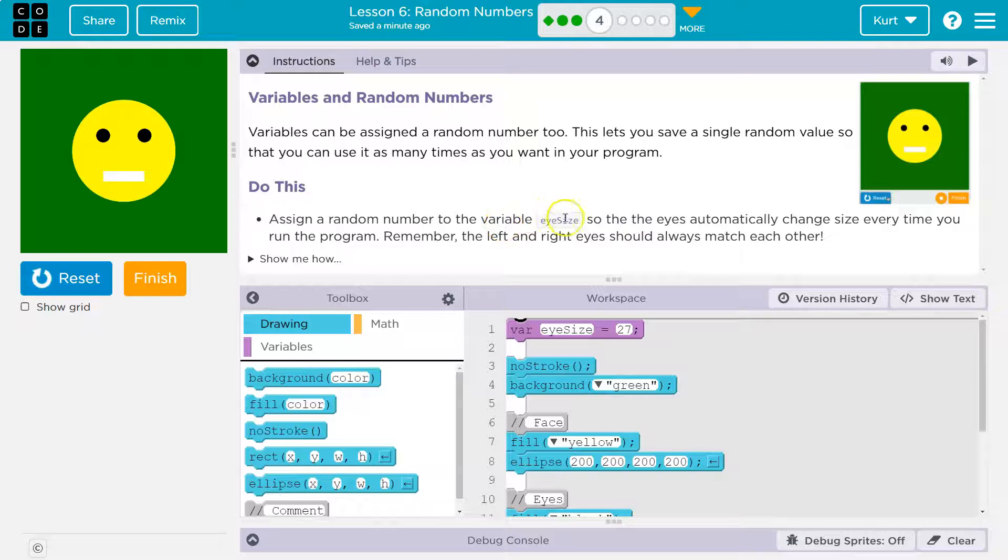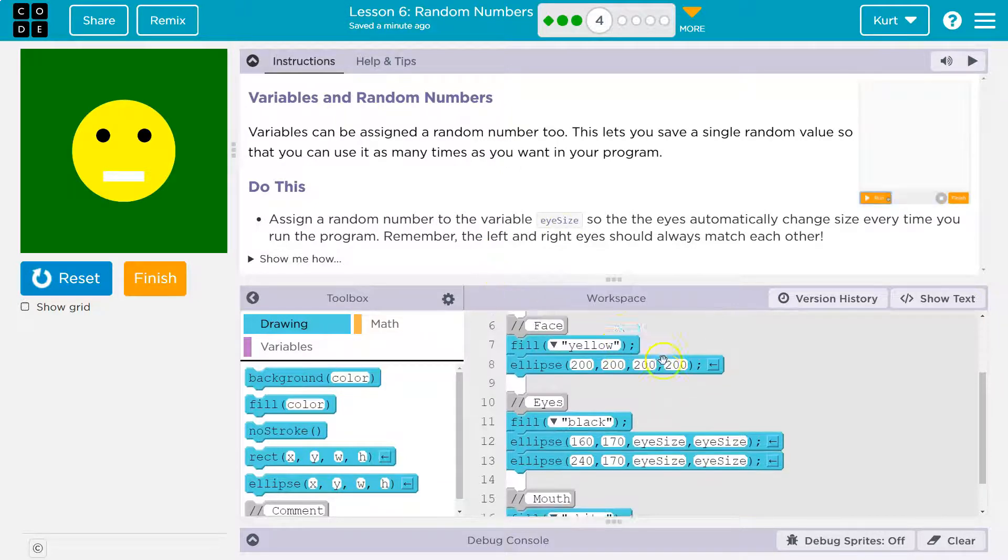Assign a random number to the variable iSize so the eyes automatically change size every time you run the program. Remember, the left and right eyes should always match each other. Okay, so this is a bit tricky.